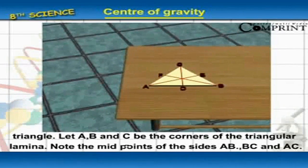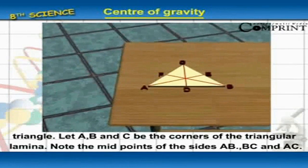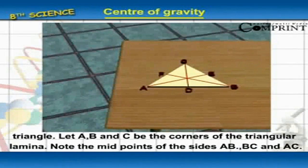Let A, B and C be the corners of the triangular lamina. Note the midpoints of the sides AB, BC and AC.